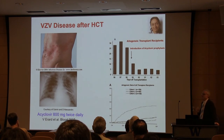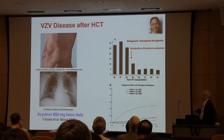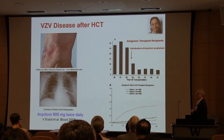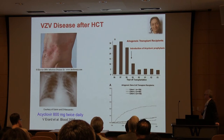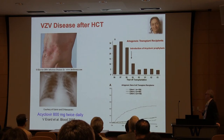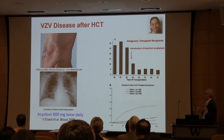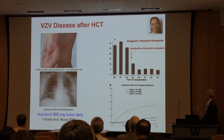The story of VZV is also impressive. Up until the 2000s, we encountered about 30% zoster in both our allogeneic and autologous patients. Most cases were segmental and dermatomal, but there were absolutely severe cases with pneumonia and hepatitis, which were sometimes fatal. We decided to prolong the duration of acyclovir — first to one year, then for the duration of immunosuppression — which drastically reduced our incidence of varicella-zoster complications.